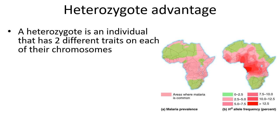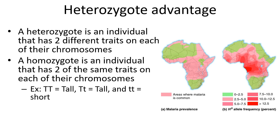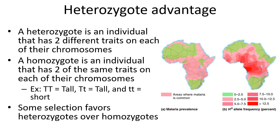Malaria and sickle cell anemia is also an example of heterozygote advantage. If you are heterozygous for sickle cell anemia, you generally don't show the trait but you do show resistance to malaria. This allows the trait to remain in the population and increases allele diversity.